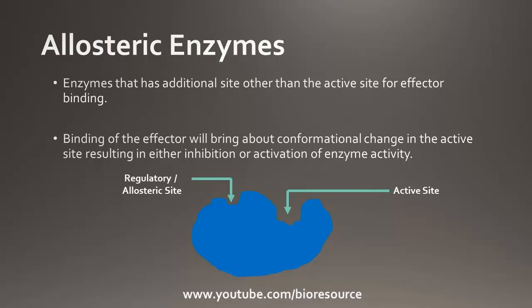Allosteric enzymes are multi-subunit enzymes and they exist in two conformational forms: the T state (tense state) and the R state (relaxed state). The T state has low activity and low affinity for the substrate, whereas the R state has high activity and high affinity.